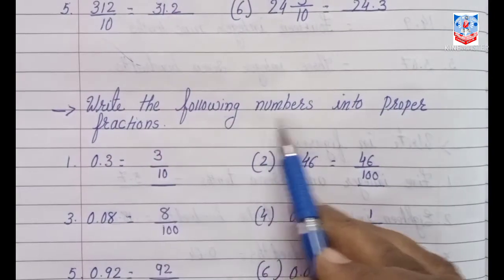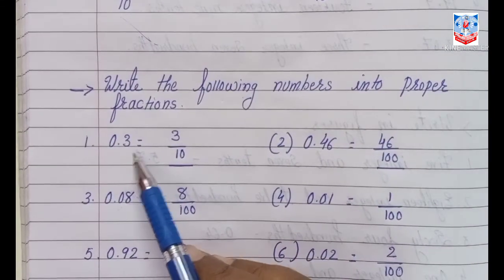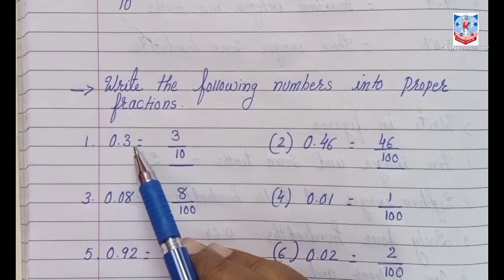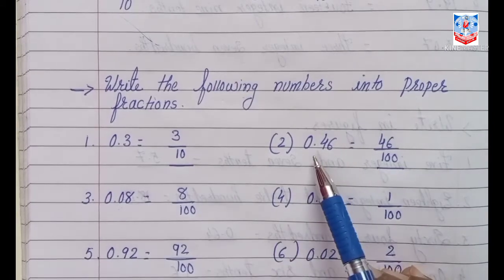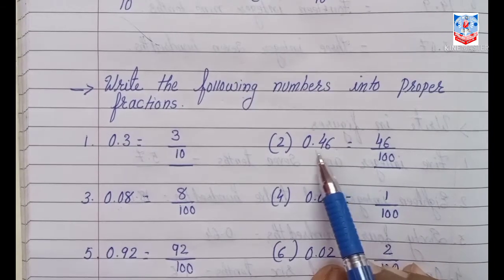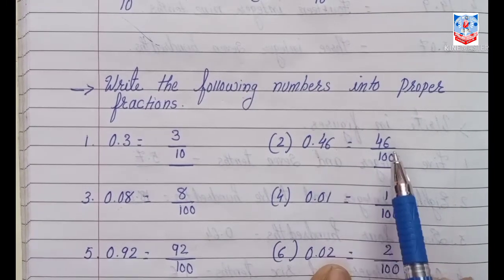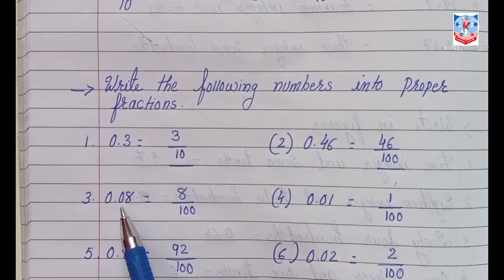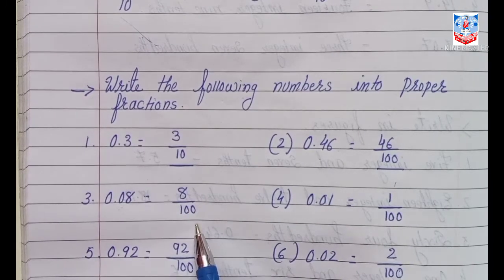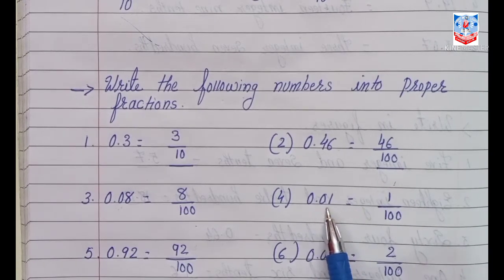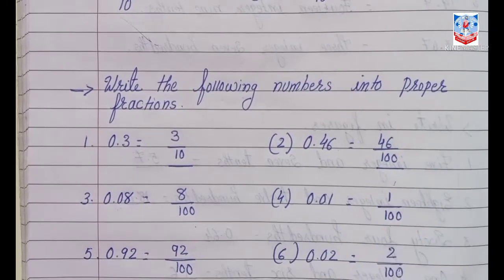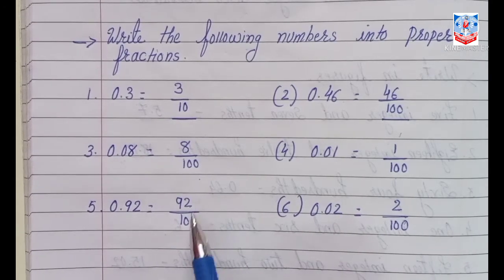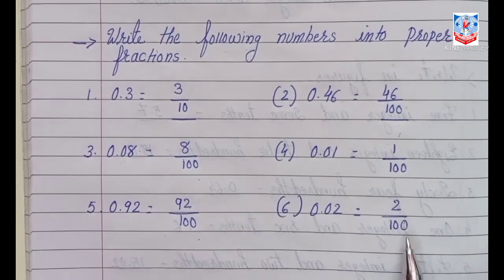Next, write the following numbers as proper fractions. 0.3: after the decimal point there is 1 digit, so it is 3 by 10. 0.46: after the decimal point there are 2 digits, so it is 46 by 100. 0.08: after the decimal point there are 2 digits, so it is 8 by 100. 0.01: 2 digits after the decimal point, so it is 1 by 100. 0.92: 2 digits after the decimal point, so it is 92 by 100. 0.02: that is 2 by 100.